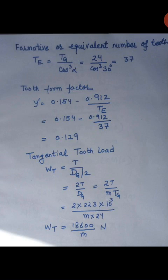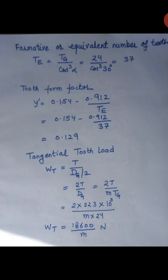Next we will calculate tangential tooth load. Wt equal to T upon Dg by 2, where Wt is the tangential tooth load, T is the torque, and Dg is the pitch circle diameter of the gear. Dg can be written as m into Tg, since module equals pitch circle diameter upon number of teeth. Putting the torque as 223 into 10 raised to the power 3 and Tg as 24, we get the tangential tooth load in terms of module: Wt equal to 18600 by m Newton.